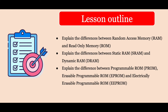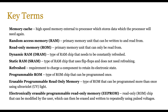Let's begin by looking at some key terms. You should already be familiar with memory cache, which is high-speed memory external to the processor that stores data which the processor will need again. Then you've got random access memory, which is primary memory — you can write and read from it, and it's normally volatile. And then you've got read-only memory, which is non-volatile primary memory that can only be read from, though as you can see, things are changing.